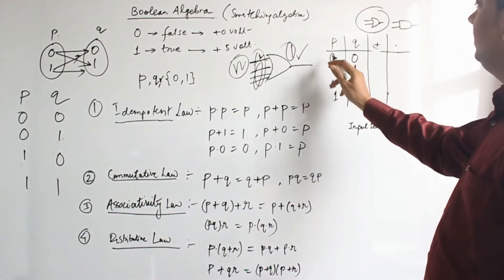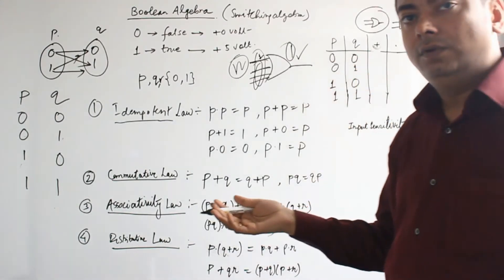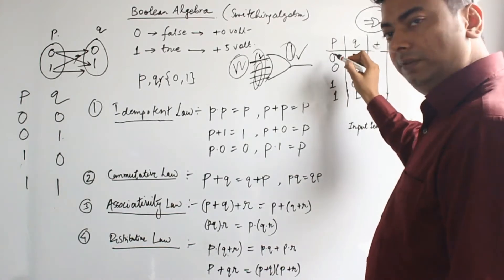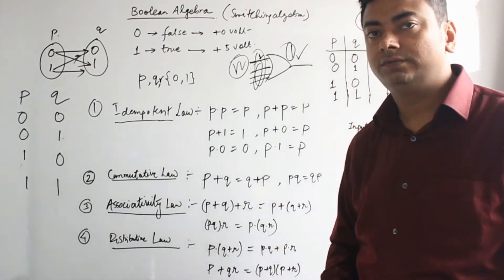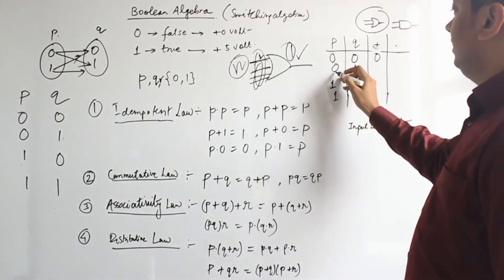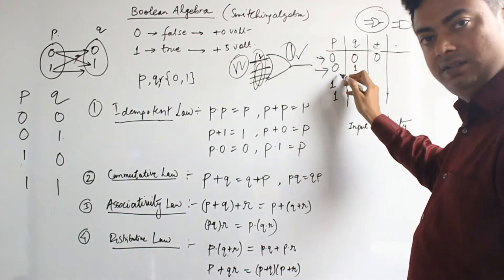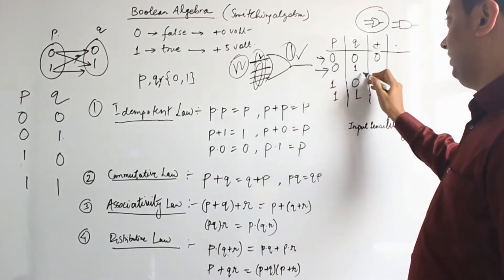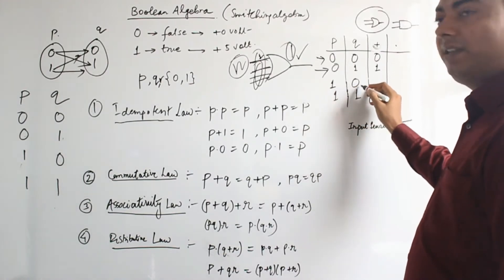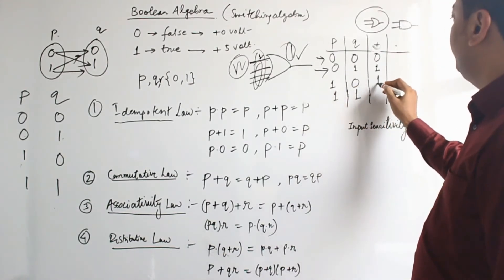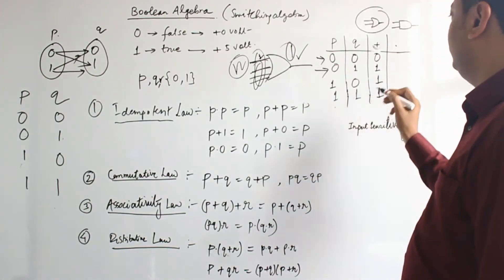Evaluating the OR truth table: for (0,0) — is it 1? No. Is it 1? No. Output is 0. For (0,1) — is it 1? No. Is it 1? Yes! No need to check Q; output is 1. For (1,0) — is it 1? Yes! Output is straight away 1. For (1,1) — is it 1? Yes! Output is 1.